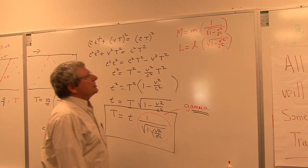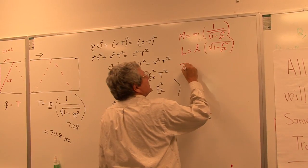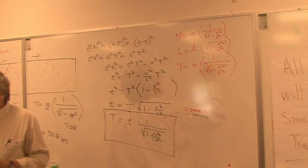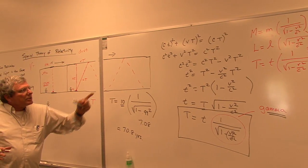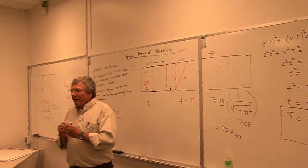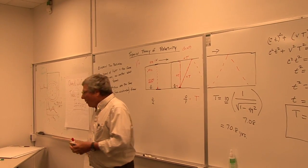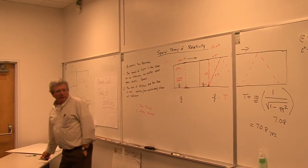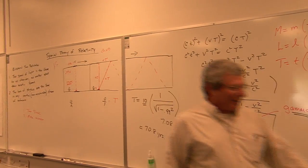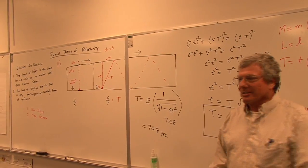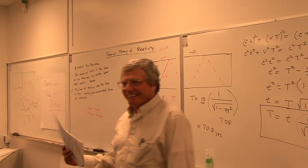So we see we have these three equations. This is basically the derivation of these Lorentz transformations. Does anybody have any questions before I give out a ten-question quiz? Thank you very much.